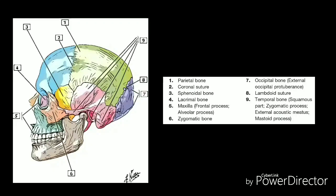There are two processes that originate from the temporal bone: the zygomatic process, which projects from the lower squamous region and articulates with the zygomatic bone of the cheek, and the styloid process, which projects downwards from the inferior surface of the temporal bone and provides attachment for several muscles associated with the tongue and mastoid portion of the temporal bone. The squamosal suture separates the parietal bone and squamous portion of the temporal bone, and the sphenosquamosal suture separates the sphenoid bone and squamous portion of the temporal bone.